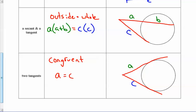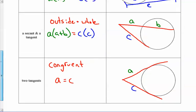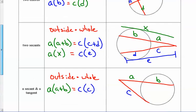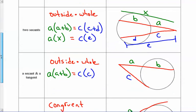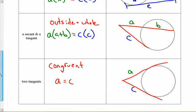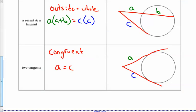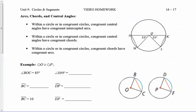So those are our four scenarios for how segments in a circle can look. Now let's look at a couple of properties of what's happening inside circles: arcs, chords, and central angles.